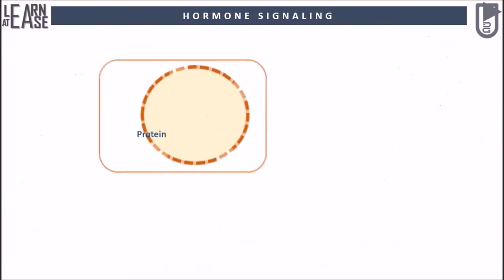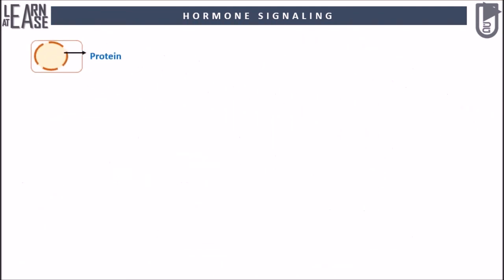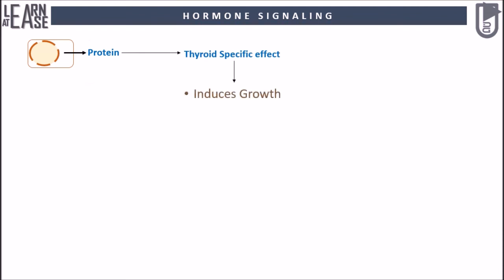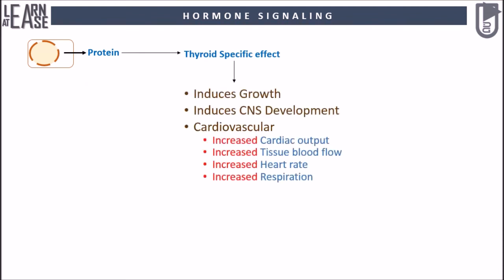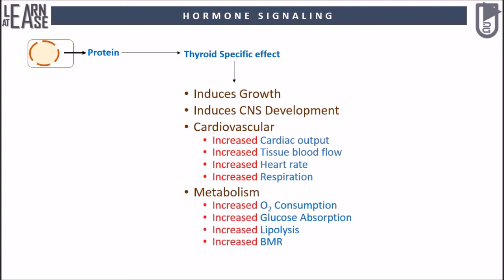The protein so formed induces growth and central nervous system development. It affects the cardiovascular system by increasing cardiac output, tissue blood flow, heart rate, and respiration. It also affects metabolism by increasing oxygen consumption, glucose absorption, lipolysis, and basic metabolic rate.